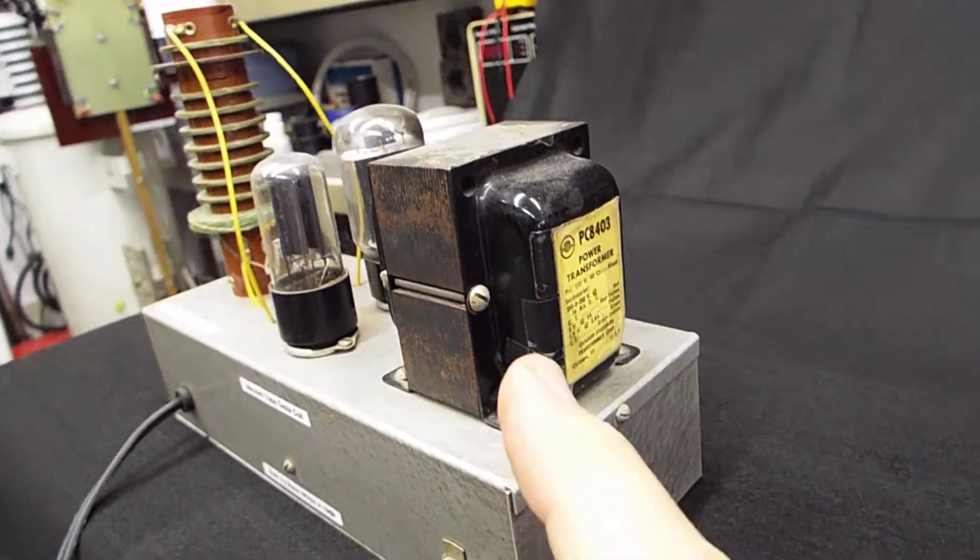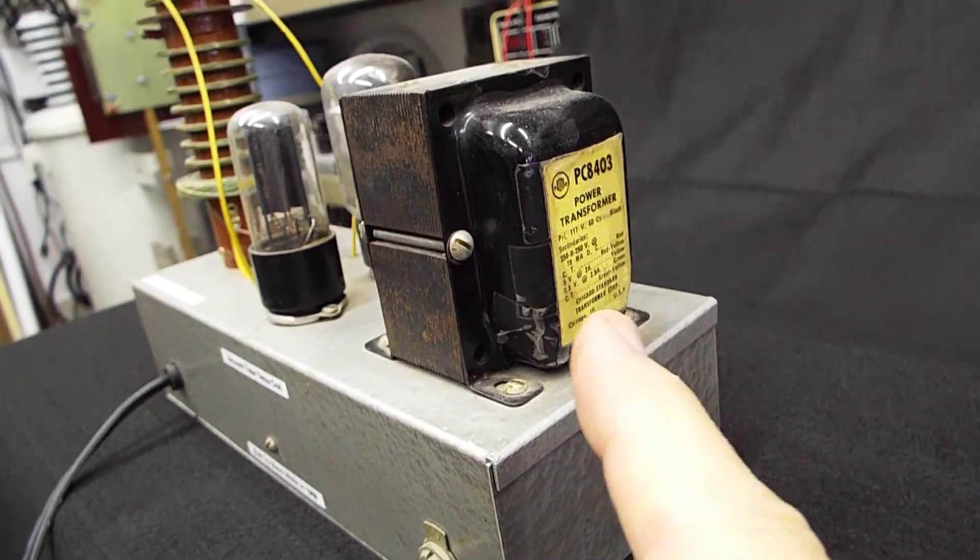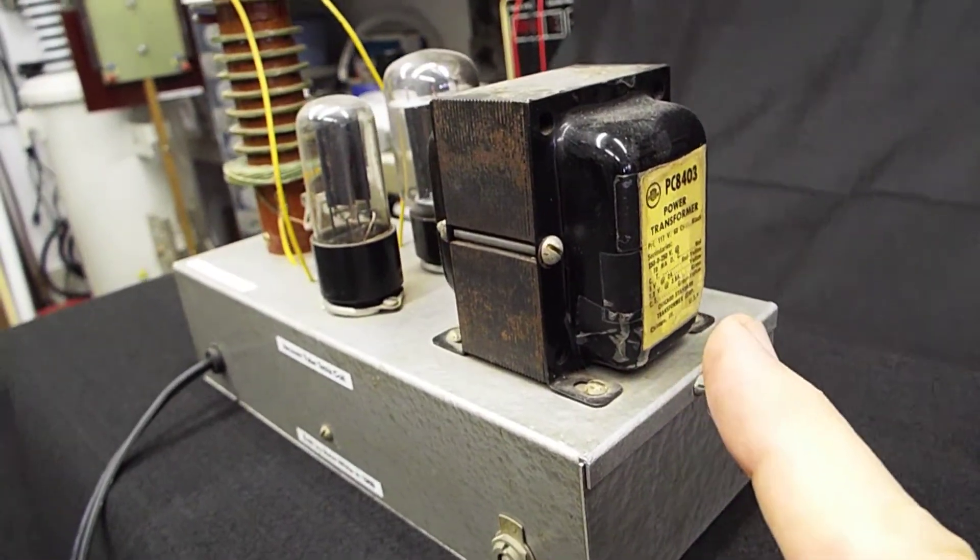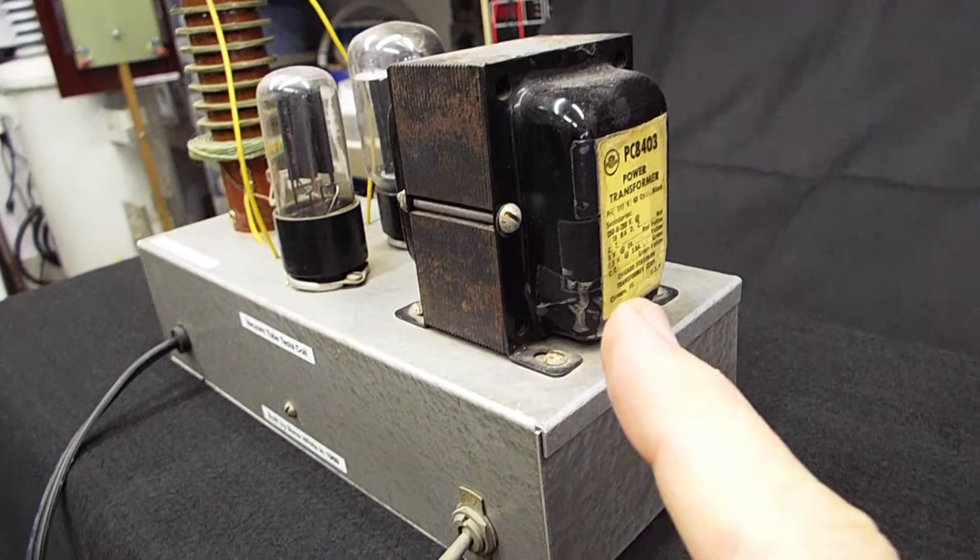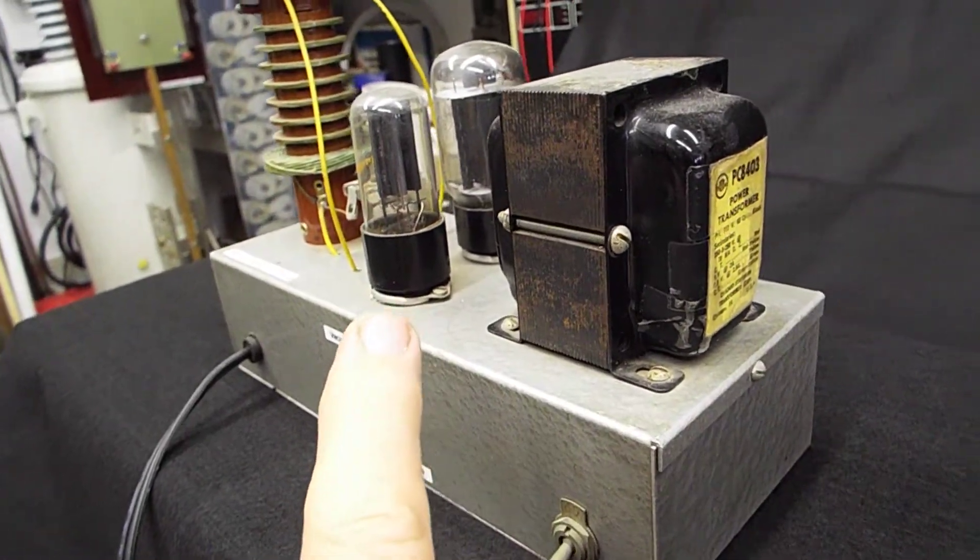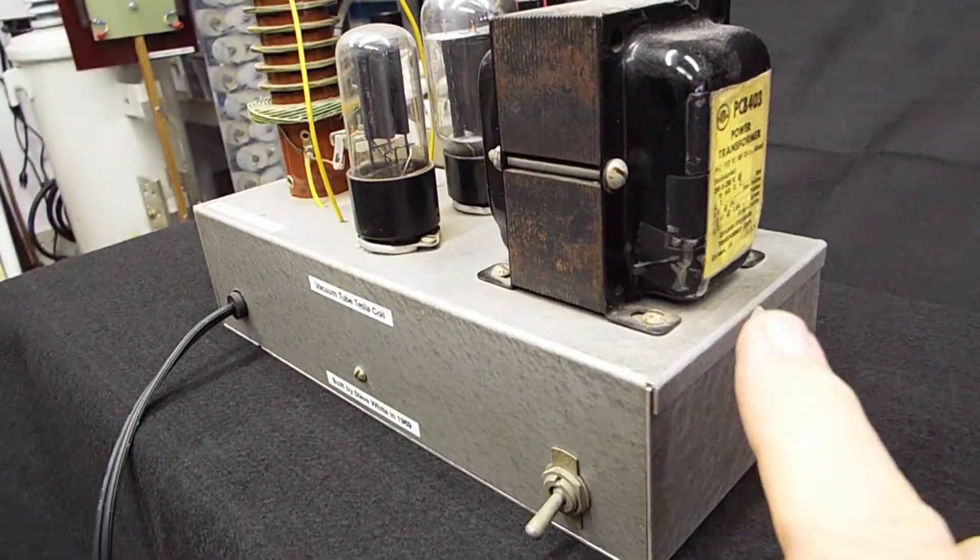And this is the power transformer. It's mainly 500 volts center tapped for the plate power, and it supplies filament power.